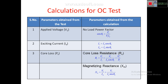These are the calculations for the OC test, divided into parameters obtained from the test and what we can calculate from those parameters. This completes the explanation for the OC test. Let us now move on to the short circuit test under the same headings: circuit diagram, procedure, and calculations.